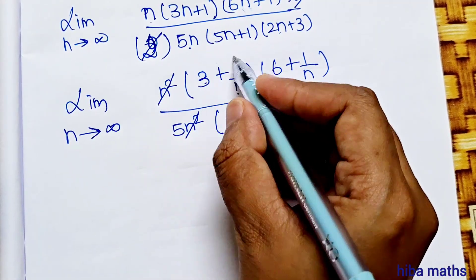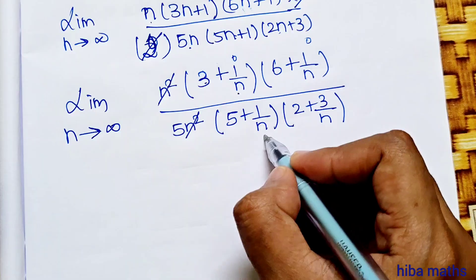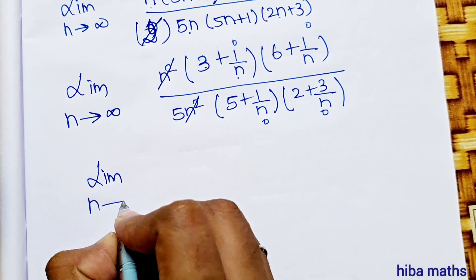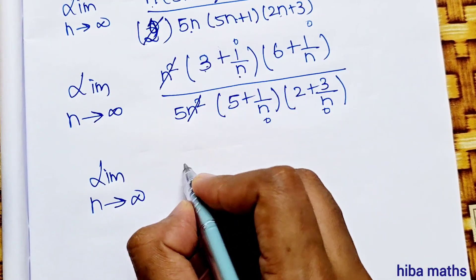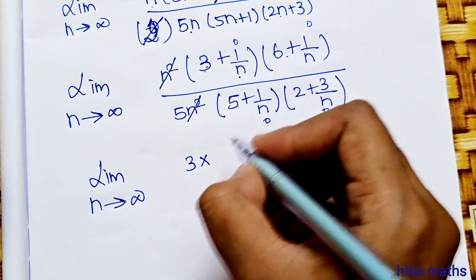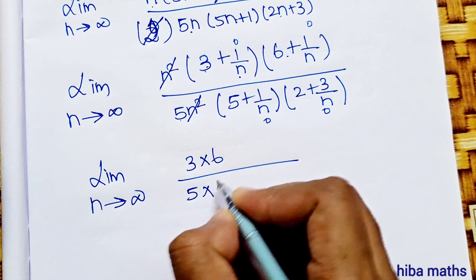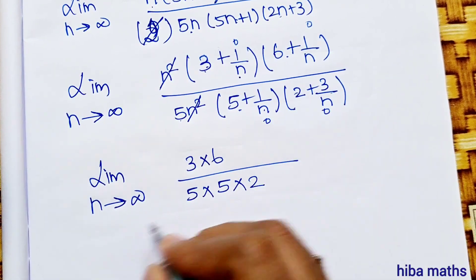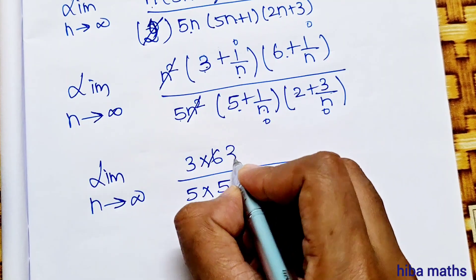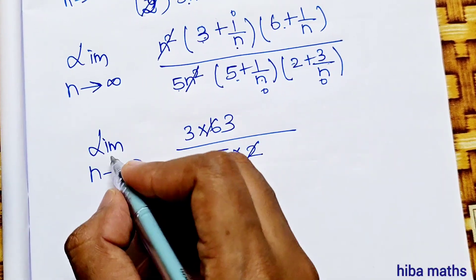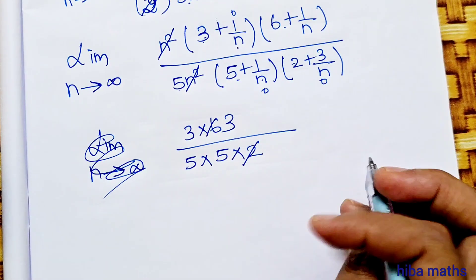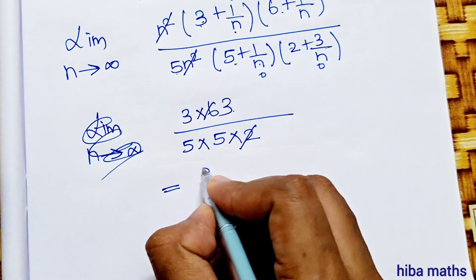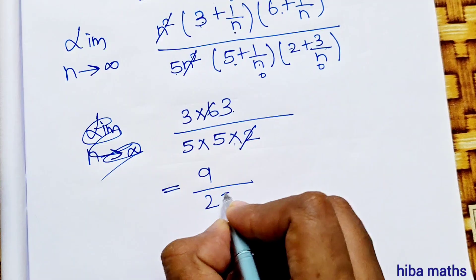As n turns to infinity, all terms with 1 by n go to 0. So the result is 3 times 6 divided by 5 times 5 times 2, which gives 18 divided by 50, equal to 9 by 25. Hence proved.